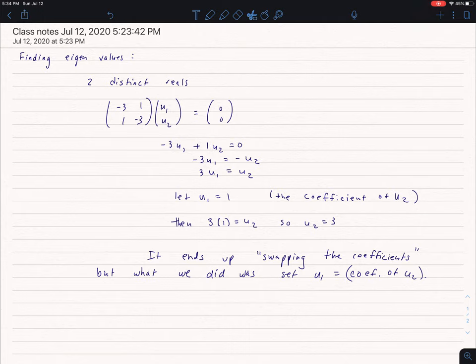So if I have two distinct reals, I set it up something like this, and I get it down to an equation where 3u1 equals u2. So I have things just in terms of u1, u2, there's no floating constant.